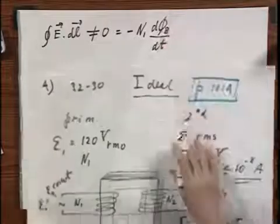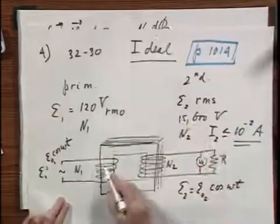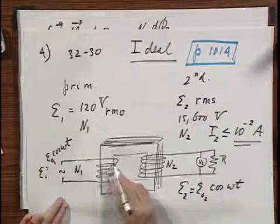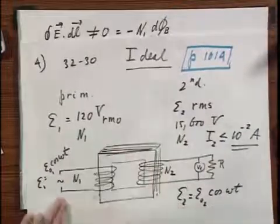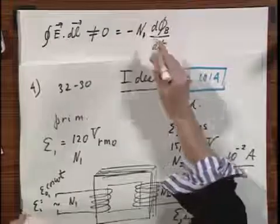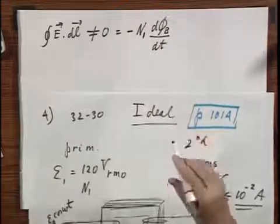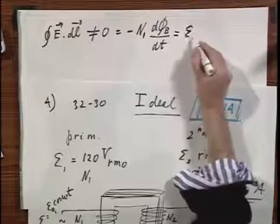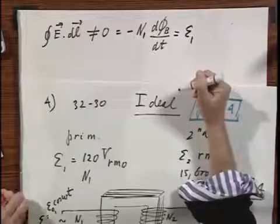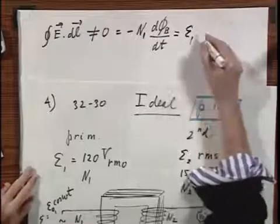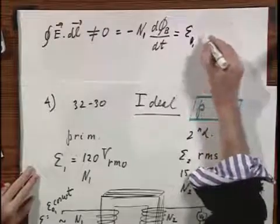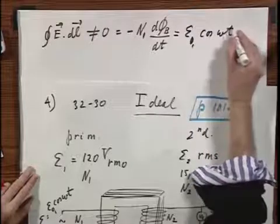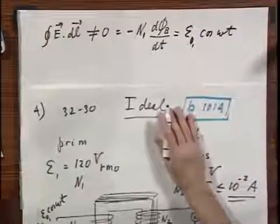Now, this Φ_B is only through the surface of one of these loops — one of these spiral staircase surfaces. That's the way we define Φ_B; that's why we have an N1 here. And this equals E1, which of course equals E01 times the cosine of omega t.